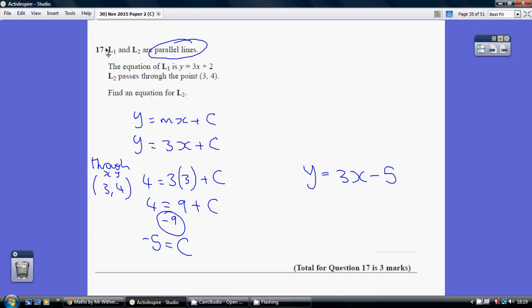We know it's parallel to line 1, so it's going to have the same gradient. And remember, the gradient is the number in front of the x, so our parallel line has the gradient 3. So, we know our new equation for L2 is going to be y equals 3x plus something.